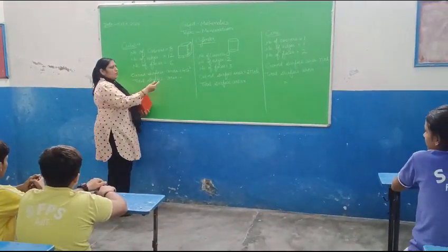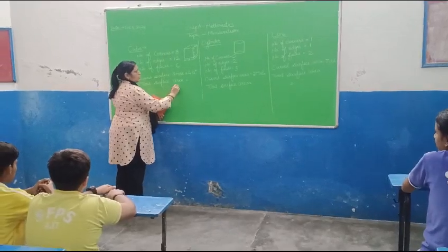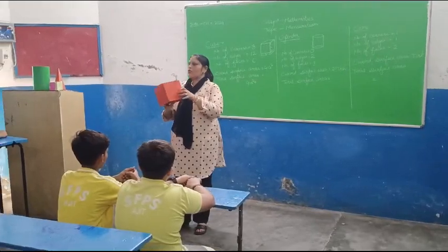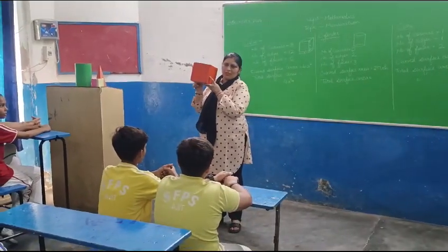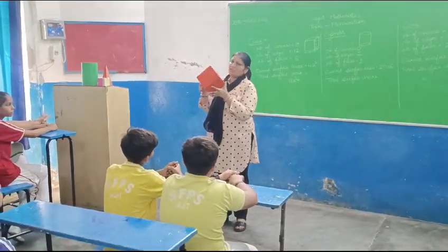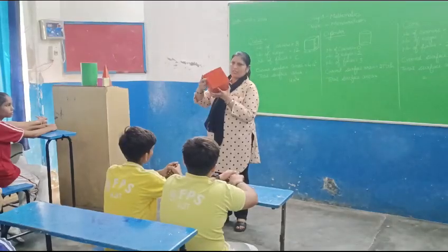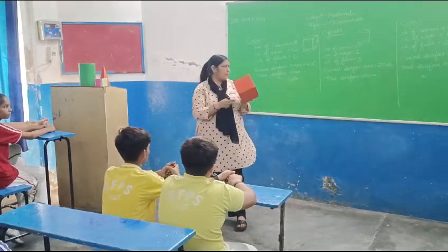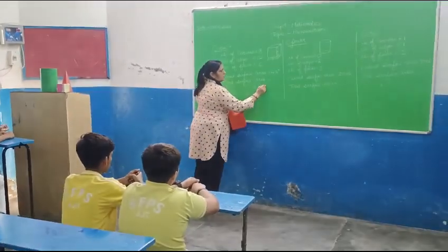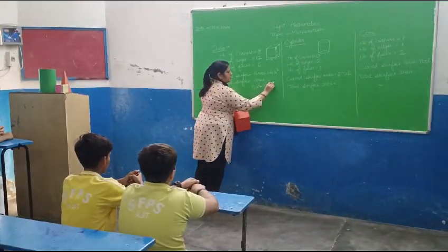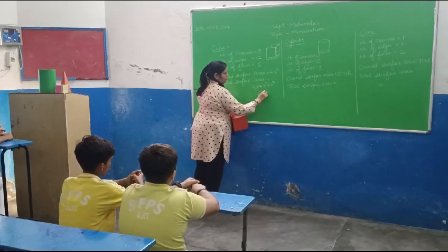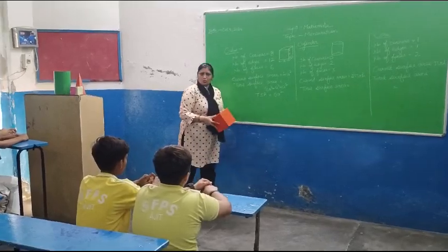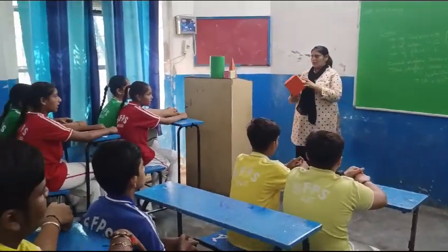Now, for total surface area, we have to add the roof and bottom of the figure also. The shape of the roof is square, so we add two A squares — the top and the bottom. It becomes 6A², which is the total surface area of the cube. Is it okay? Yes.